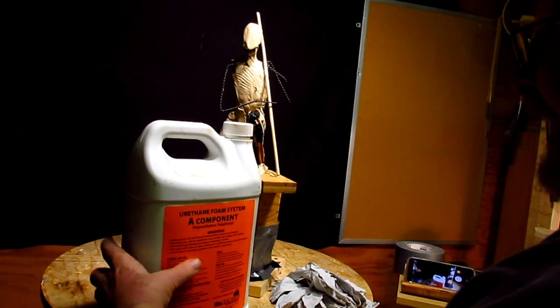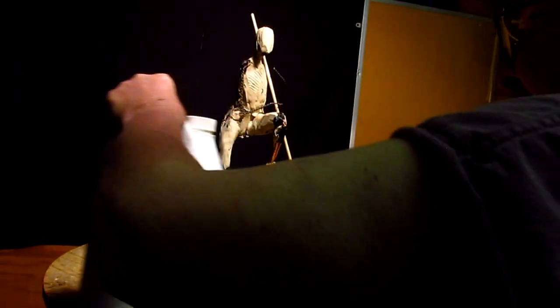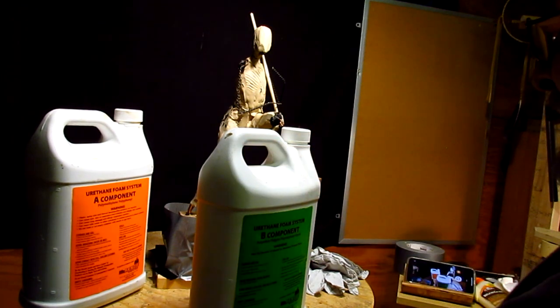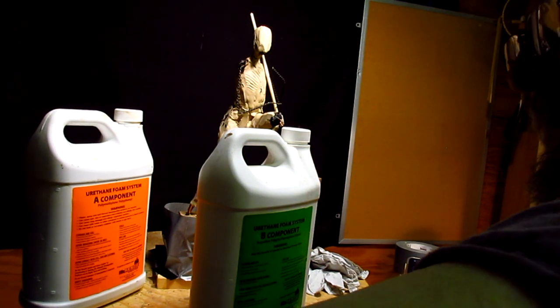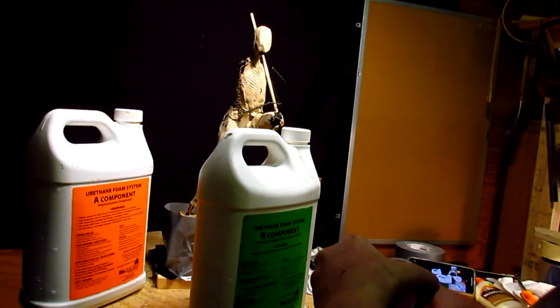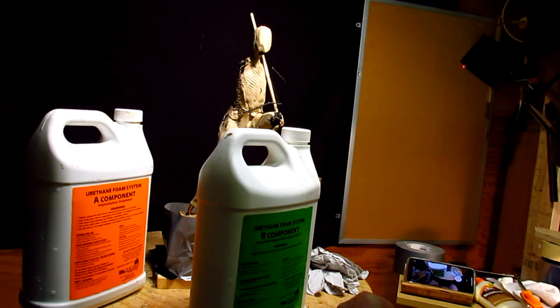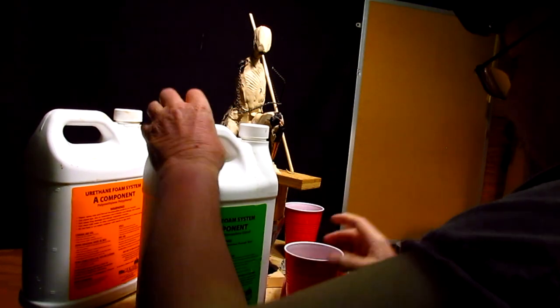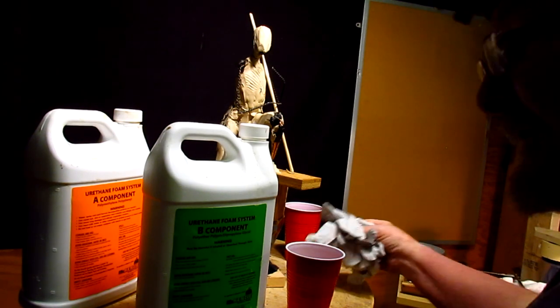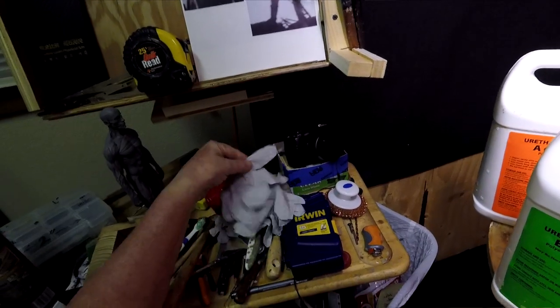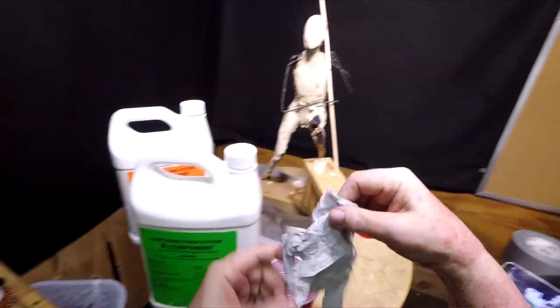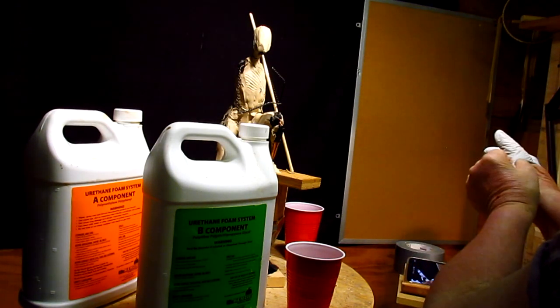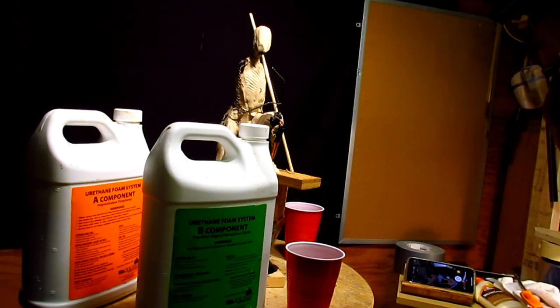This is the A component of my urethane foam, and this is the B. I can't remember which one is the really bad one, because when it hardens and gets exposed to the air, it gets like glue. I'm going to put some rubber gloves on because I don't want to get this stuff on my hands.